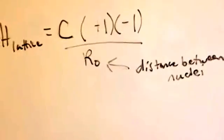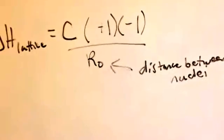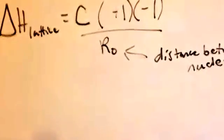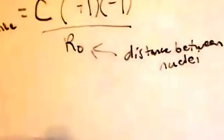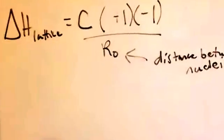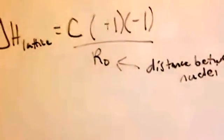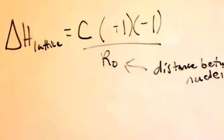The greater the charge, so if we have 2+ times 2-, that's a factor of four difference up here. If we have 3+ and 3- for the charges, that goes to a factor of nine increase.